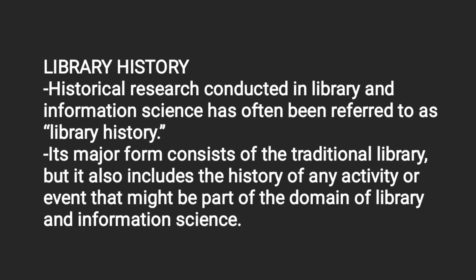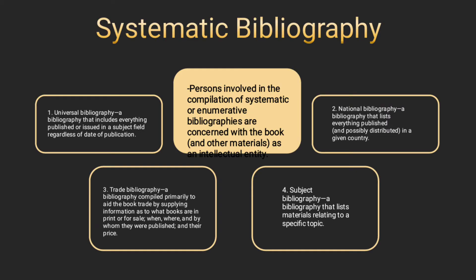Library history. Historical research conducted in library and information science has often been referred to as library history. Its major form consists of the traditional library, but it also includes the history of any activity or event that might be part of the domain of library and information science. Systematic bibliography: persons involved in the compilation of systematic or enumerative bibliographies are concerned with the book and other materials as an intellectual entity.